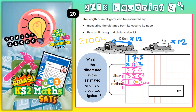Now for the smaller crocodile, we need to do 15 times 12. So again, let's do a magic zero. 2 times 5 is 10, put the 0 in, carry the 1. 2 times 1 is 2, plus 1 is 3. Scribble out your carry digits. Now this 1 means 10, so you put your magic zero in: 1 times 5 is 5, 1 times 1 is 1 — that's 150. Add your two answers together: 0 and 0 is 0, 3 and 5 is 8, nothing and 1 is 1. So the smaller crocodile is 180 centimetres.